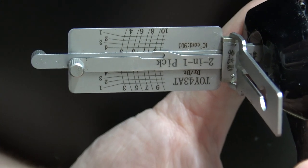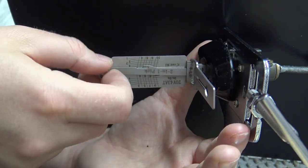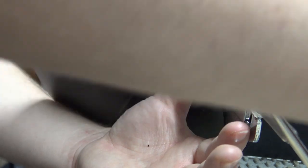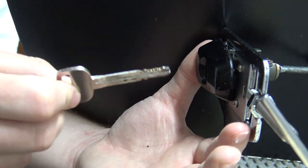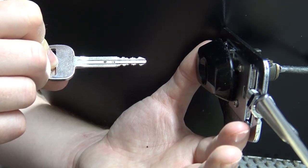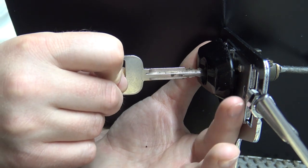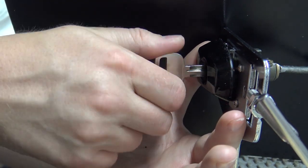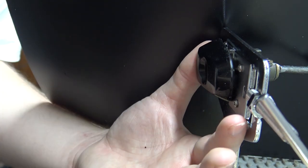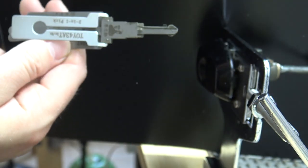Let's zoom out a little bit here. And I'm going to pull the leashy out. And then here's the actual key. This was cut on a Blitz machine a long time ago. And you can see that the key goes in and smoothly operates the lock here. So there's an example of the Toy 43 AT leashy just picking and decoding a Toyota door lock.